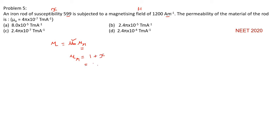That is 1 plus susceptibility. Susceptibility value is given as 599. So this is 600. So muR value you got to be 600.